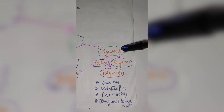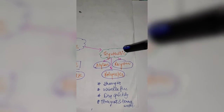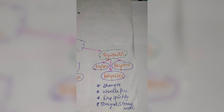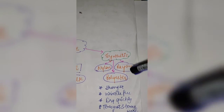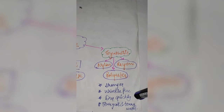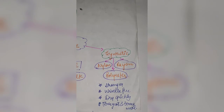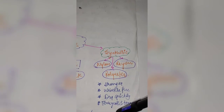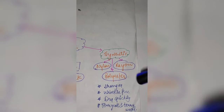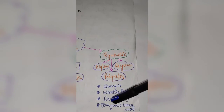If we talk about synthetic fibers, nylon, polyester, and rayon are the main synthetic fibers in use. Synthetic fibers are formed from chemicals in industries but they have many advantages over natural fibers. They are comparatively stronger, wrinkle-free, and have lesser water-absorbing properties so they dry quickly. They are also used in blended form with natural fibers.